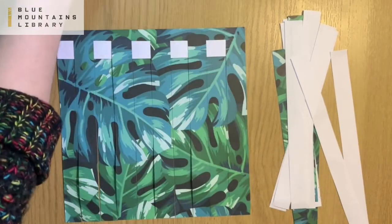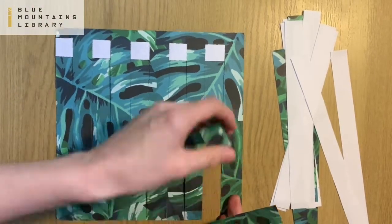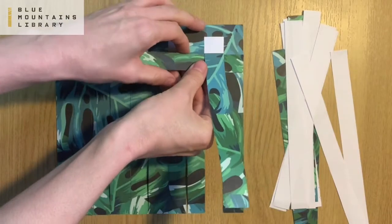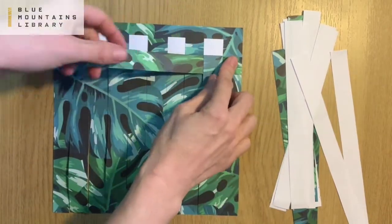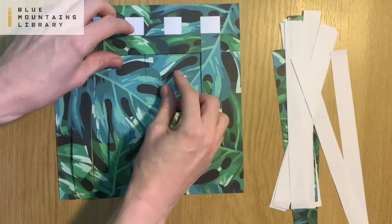Choose your second strip. This time we're going to weave in the opposite direction to the last strip. So we're going to start over and then go under. You can see how it's going to make a checkerboard effect.